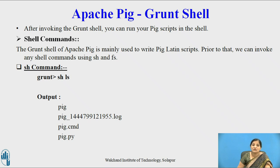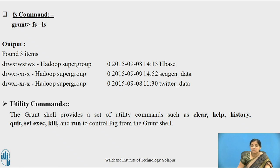Now we will see some commands run on the Grunt shell. For shell commands, use sh — for example, sh ls, which lists the contents of the shell. For HDFS file system commands, use fs, for example fs -ls. We can also use utility commands provided by the Grunt shell: clear, help, history, quit, set, execute, kill, and run to control Pig from the Grunt shell.